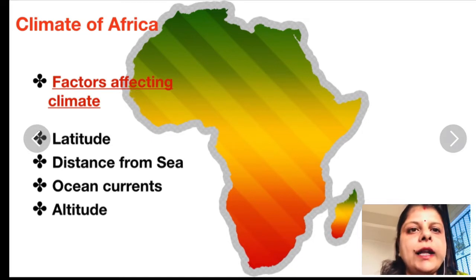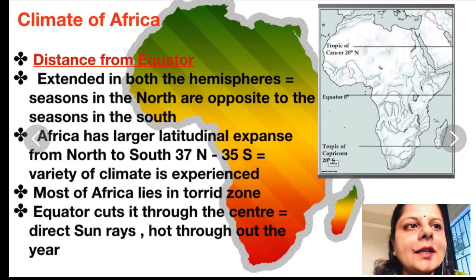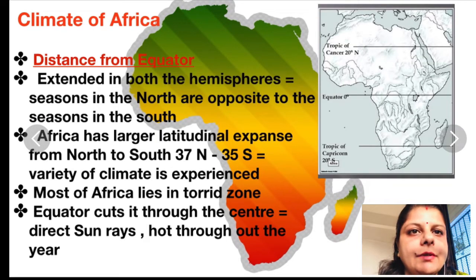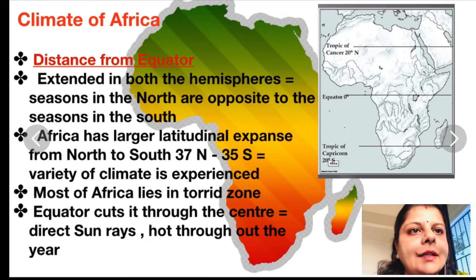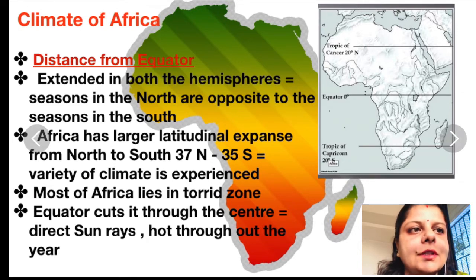Let's see them individually in detail. First is distance from equator. When we look at Africa, Africa is extended in both hemispheres. The equator is located at the center of Africa, the Tropic of Cancer is passing through the northern part, and the Tropic of Capricorn is passing through the southern part of the African continent.